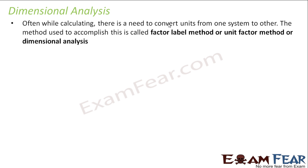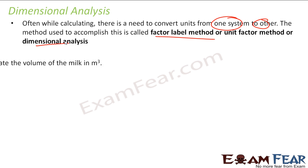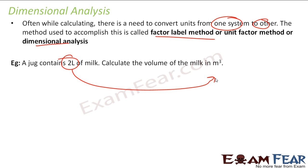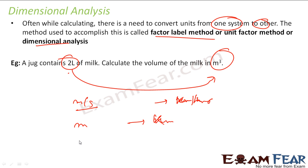Now we will understand dimensional analysis. Often in calculations we need to convert from one unit to another. There is a method called the factor label method, unit factor method, or dimensional analysis, where we convert units from one system to another. For example, if I have 2 liters of milk and want to convert to cubic meters, or if I have a speed in meters per second and need to convert to kilometers per hour — for these kinds of conversions, we need dimensional analysis.